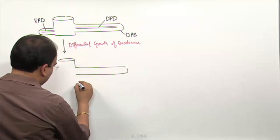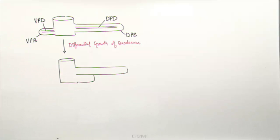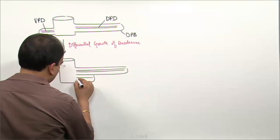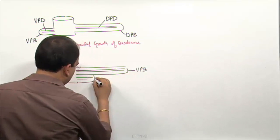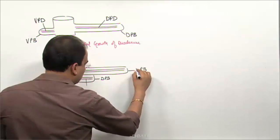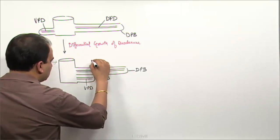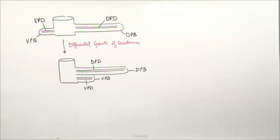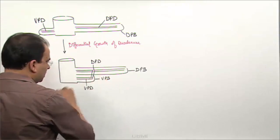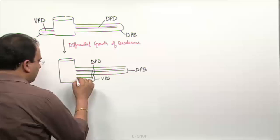After fusion, the dorsal pancreatic bud is above and the ventral pancreatic bud is below. The duct systems of both buds — the ventral pancreatic duct and the dorsal pancreatic duct — will anastomose with each other, and this anastomosis gives rise to the major pancreatic duct.